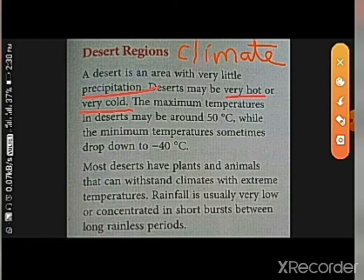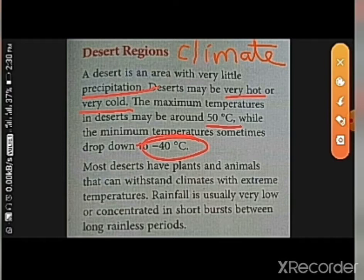Cold deserts are the polar regions covered with snow. The maximum temperatures in hot deserts may be around 50 degrees Celsius, while the minimum temperatures sometimes drop down to minus 40 degrees Celsius. Plants and animals have some adaptations that enable them to withstand — meaning tolerate — climates with extreme temperatures, both very hot and very cold.